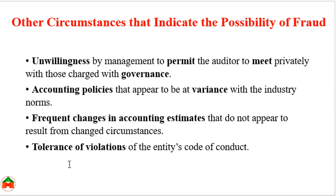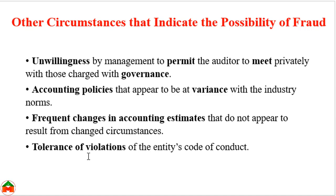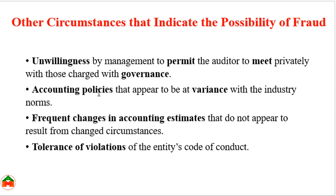The last factor is tolerance of violations of the entity's code of conduct — if the entity is consistently violating rules and there is no action taken against those violations, that type of tolerance also indicates the possibility of fraud risk. These are the circumstances that indicate the possibility of fraud. Thank you.